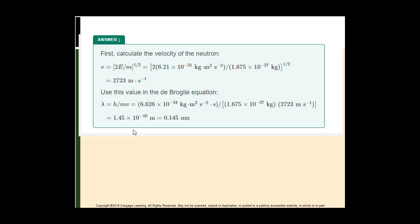First, I need to find the velocity because I was given the mass. Rearranging ½mv² and solving for velocity gives 2,723 meters per second. Then I can plug it into de Broglie's equation: Planck's constant divided by m times v. Once I get my answer, I multiply by 10 to the 9th to convert, giving 0.0145 nanometers.